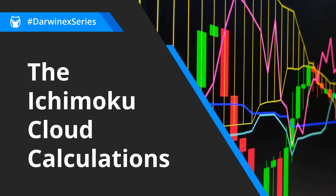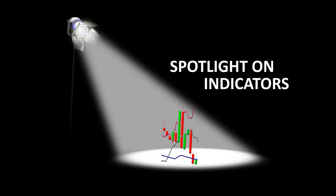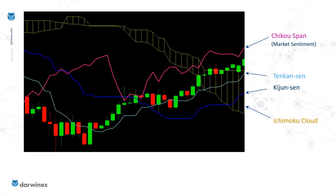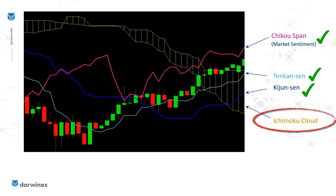The series in question is what I called Spotlight on Indicators. And so far, while we've been looking at Ichimoku, we've covered the Chiku span and the calculation behind that, likewise for the Tenkan Sen and the Kijun Sen. And we're focusing our attention now on the Ichimoku cloud and the two lines that define it.